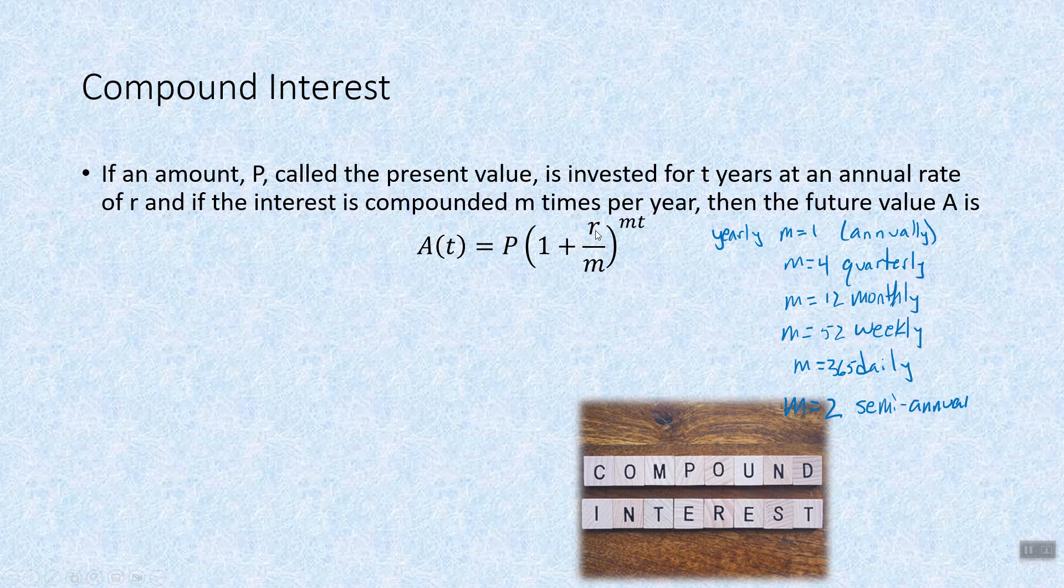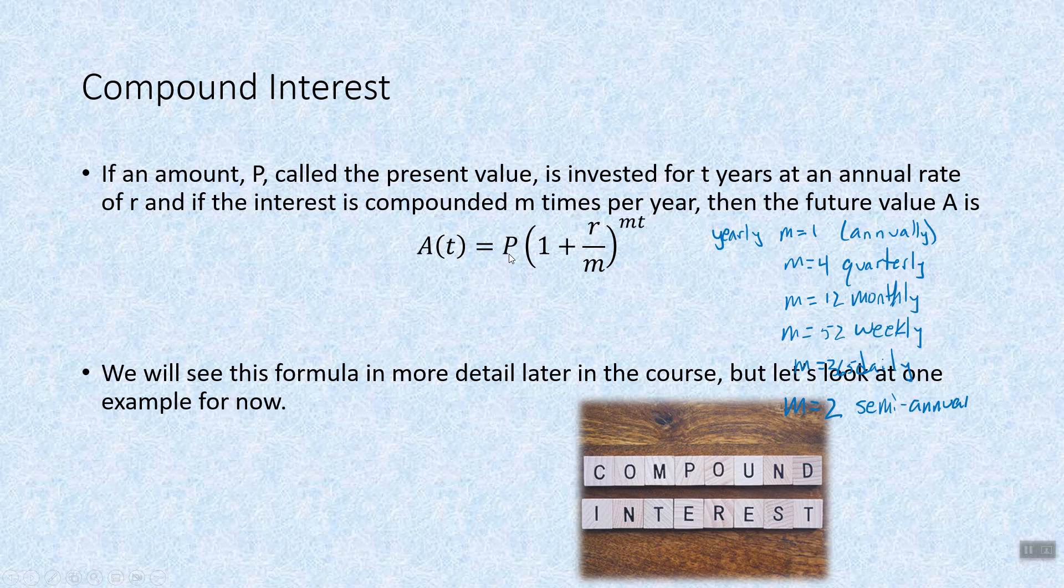The rest of it: t is always in years, r is an interest rate turned into decimal form, and P is going to be our principal amount. We'll see this formula a little bit different, so our variables are going to be a little bit different. But otherwise it's more detail. We'll see it later in the course. Let's take a look at a basic example.